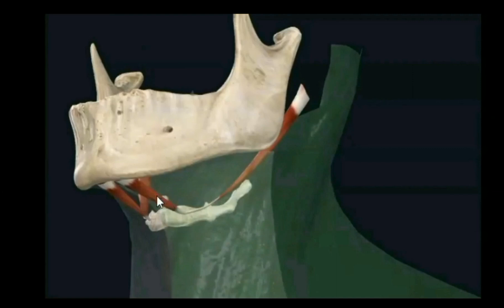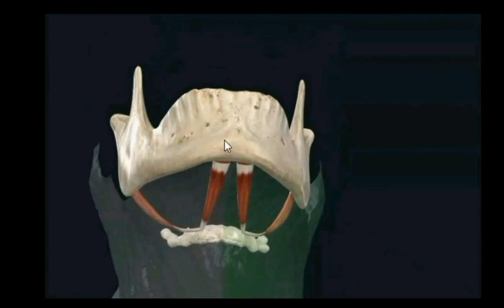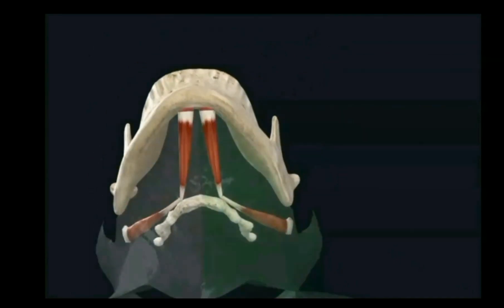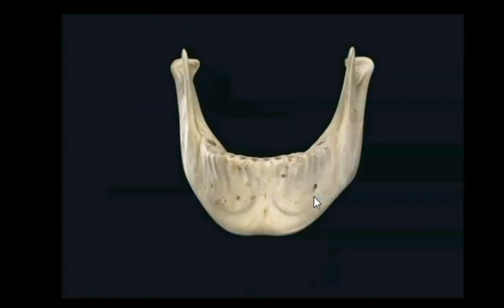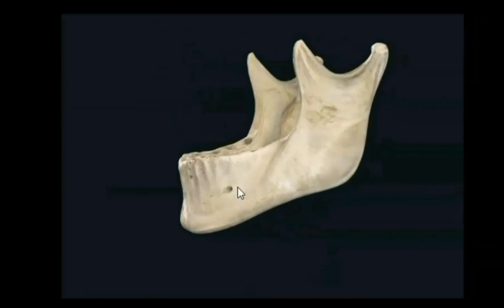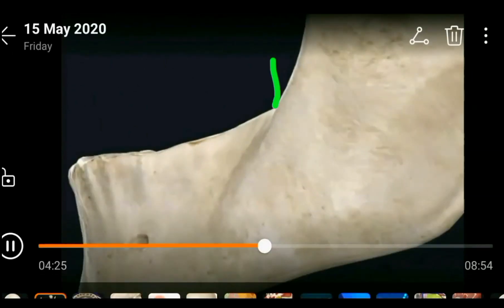Along the inferior border of the body there is attachment of the investing layer of deep cervical fascia. Just near the symphysis menti, on either side, you will see the digastric fossa for the origin of the anterior belly of digastric — just below and in front of the sublingual fossa. Along the entire inferior border runs the investing layer of deep cervical fascia, and just behind the symphysis menti below the inferior genial tubercle is the digastric fossa.